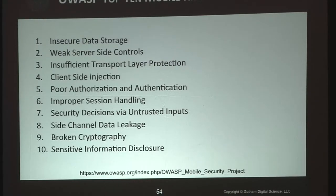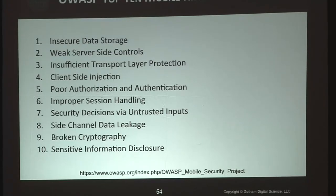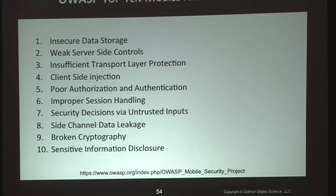Another great resource when looking at mobile threats is the OWASP Mobile Top 10. There are some similarities to the standard application Top 10. Going through these quickly: insecure data storage, weak server-side controls, insufficient transport layer protection, client-side injection, poor authorization and authentication, improper session handling, security decisions via untrusted inputs, side-channel data leakage, broken cryptography, and sensitive information disclosure.